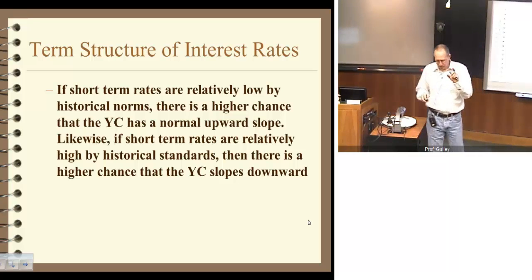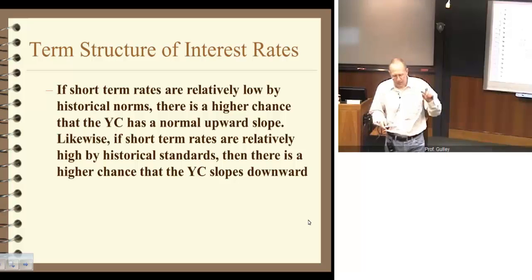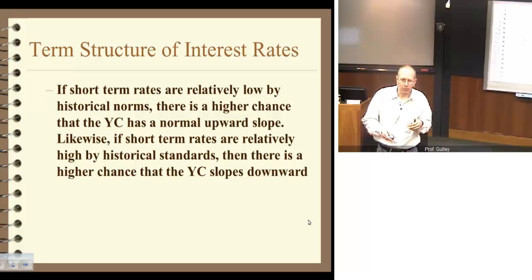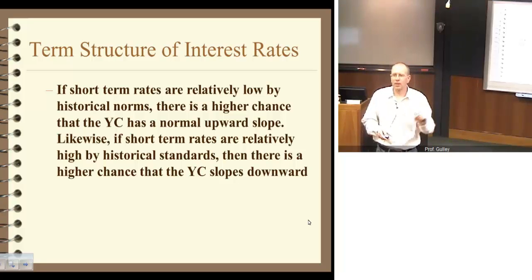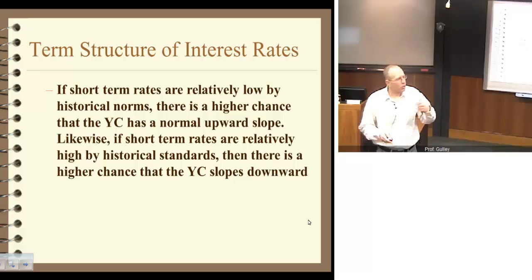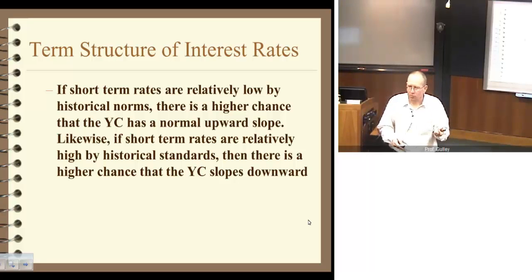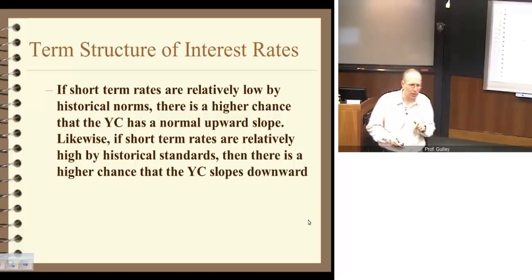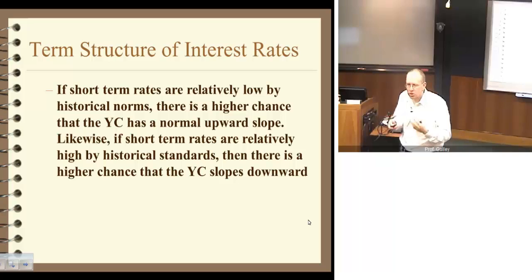The third fact is slightly more nuanced. Suppose you know that historically, short-term interest rates are abnormally low — that's the only piece of information you have. You have a good shot at accurately predicting that the yield curve slopes upward. The reverse is also true: if short-term interest rates are higher than normal, there's a better than average chance the yield curve will slope downward. So if you know only the short end of the yield curve, you have a good ability to predict what the overall curve will look like.